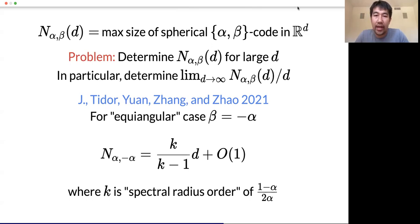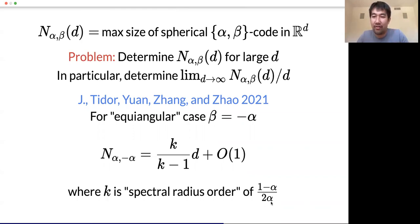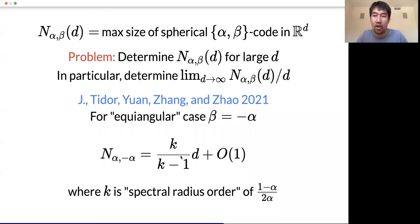Together with Jonathan, Yuan, Shen Tong, and Yufei, a year ago we settled the equiangular case, namely when β equals minus α. In that case the result looks as follows: the function is approximately (k/(k−1)) · d, where k is the spectral radius order — a natural number at least 2 — calculated from α. Hence the largest coefficient you can get here is two, achieved when k equals two. Normally you get something smaller, but the best is 2d plus O(1).